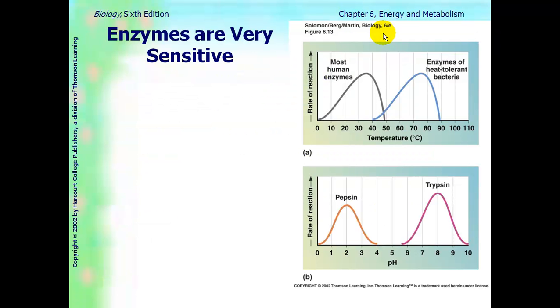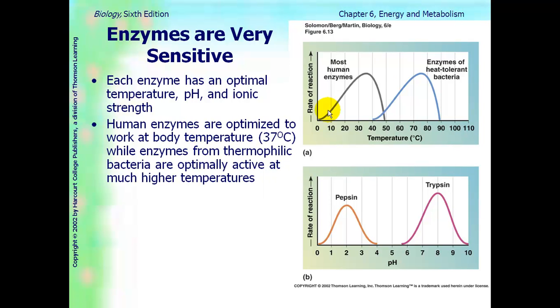The next concept we need to talk about is that enzymes are very sensitive. And this is kind of what our AP lab coming up is about. So each enzyme has an optimal temperature, the best temperature that they work their best at, the fastest rate, optimal pH and ionic strength that they work their best in. Human enzymes, as you can see on the graph, are optimized to work at body temperature, which is roughly 37 degrees Celsius.